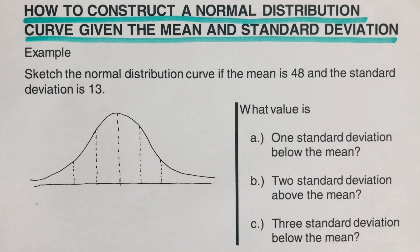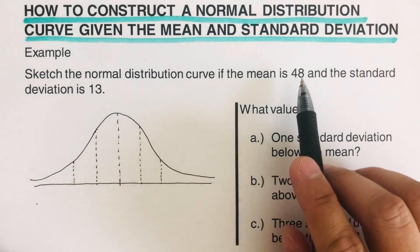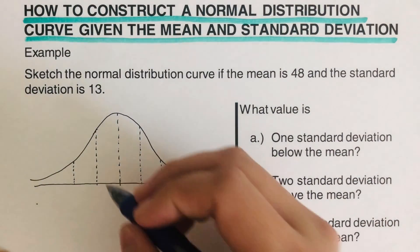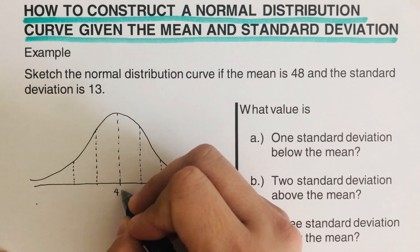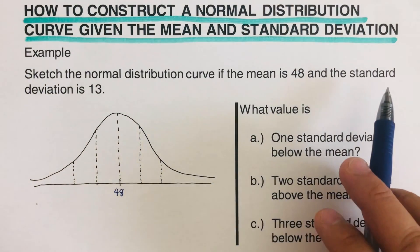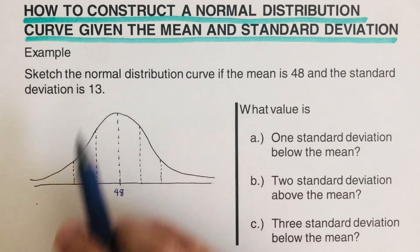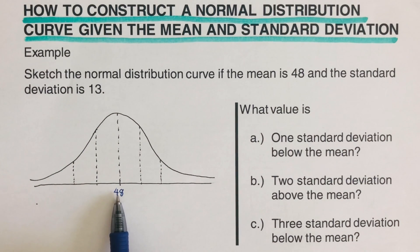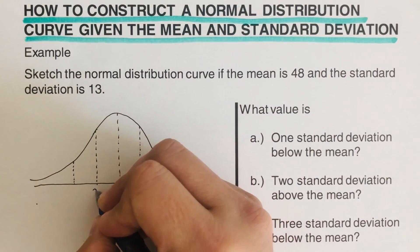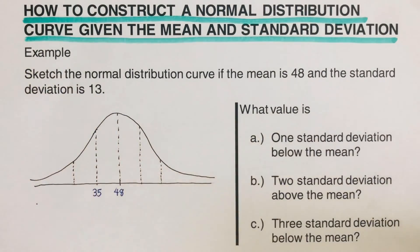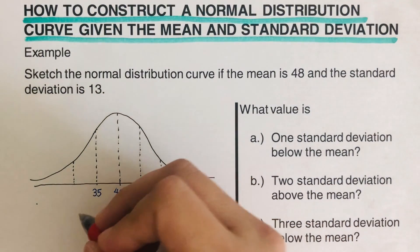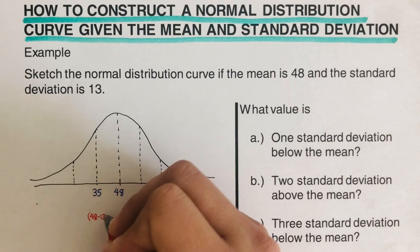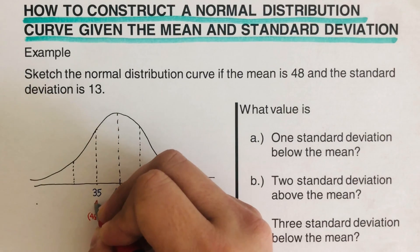Looking at the problem, the mean is 48, so 48 sits in the middle of the normal curve. The standard deviation is 13, so one standard deviation below the mean is 48 minus 13, which equals 35.